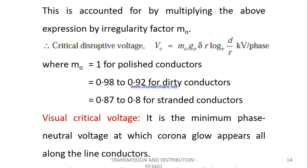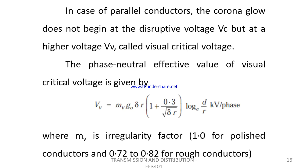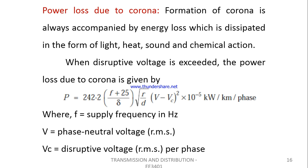The critical disruptive voltage with respect to the irregularity factor varies for different types of conductors. For polished conductors, the irregularity factor is 1. For dirty conductors, it is 0.98 to 0.92, and for standard conductors, it is from 0.87 to 0.80. The visual critical voltage is the minimum phase-to-neutral voltage at which the Corona glow appears all along the conductors, and it depends upon the irregularity factor Mv. Power loss due to Corona can be directly calculated from the supply frequency and the phase-to-neutral voltage and the critical disruptive voltage.